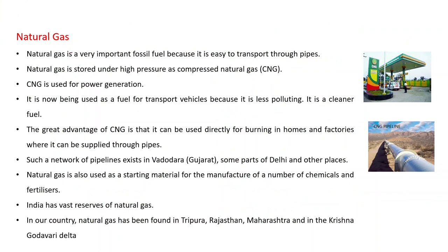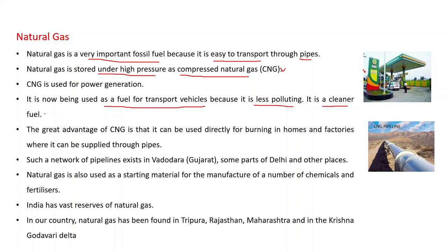Natural gas is a very important fossil fuel because it is easy to transport through pipes. It is stored under high pressure as Compressed Natural Gas (CNG). CNG is used for power generation and is now being used as a fuel for transport vehicles because it is less polluting — this is why it is known as a cleaner fuel. Many autos and buses in big cities are running on CNG. A great advantage of CNG is that it can be used directly for burning in homes and factories where it can be supplied through pipes.